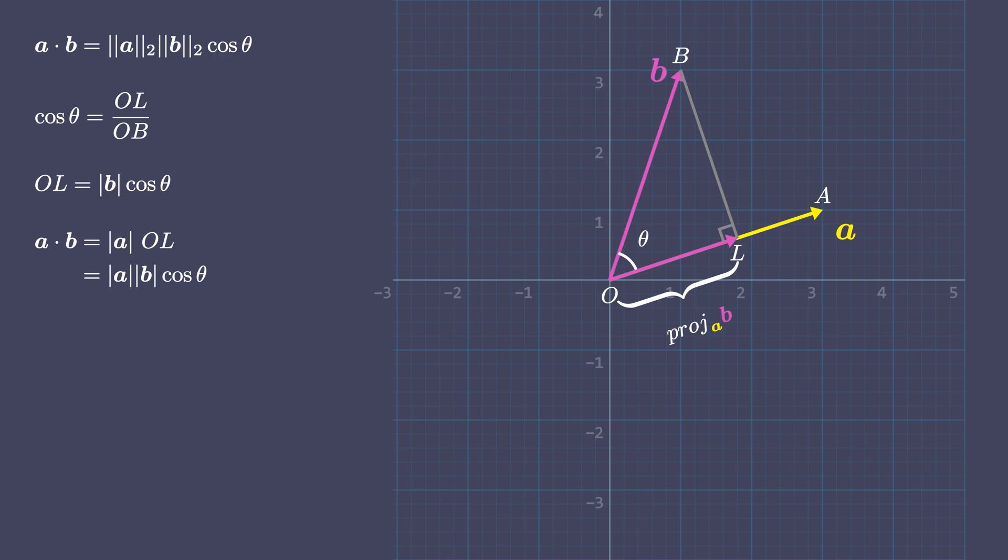Also OL is the vector projection of A on B, so the same equation can be written as A times projection of B on A.